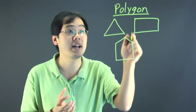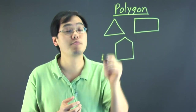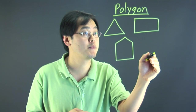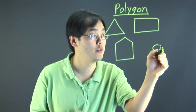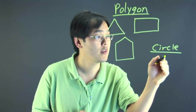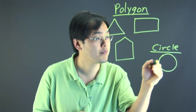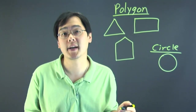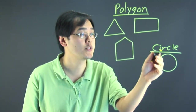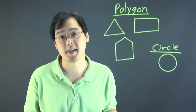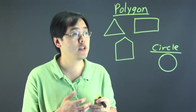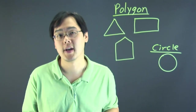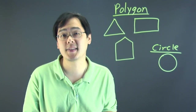A closed shape is not limited to polygons, even though most of them are. A very special closed shape is that of a circle, because a circle is considered a closed shape, but a circle is not considered a polygon because it is not made up of line segments. So whenever you have a closed shape, it's either going to be a circle or a polygon.